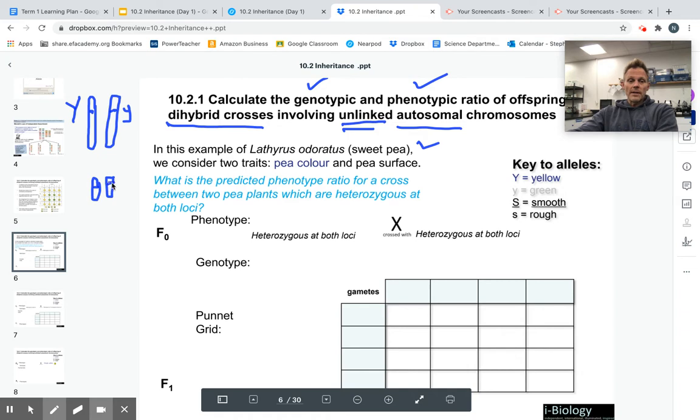The other allele, the other gene we're going to look at, is the texture of the pea. So it could be smooth, or it could be rough. Smooth is dominant, so we write a big S. Rough is recessive, so we write a small s.